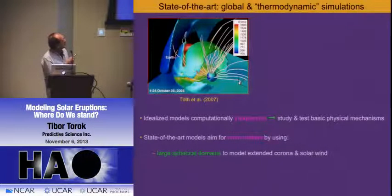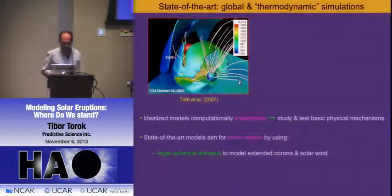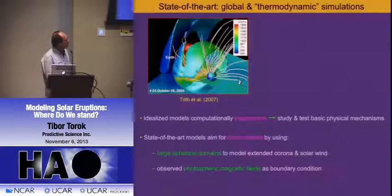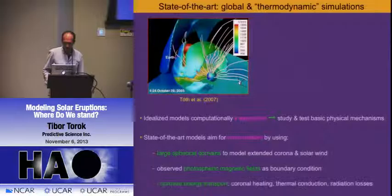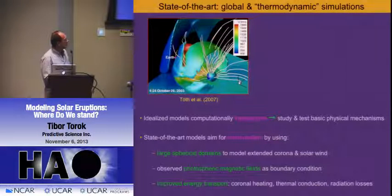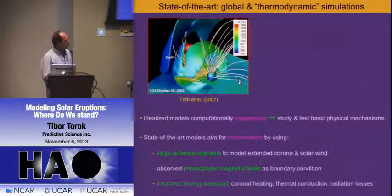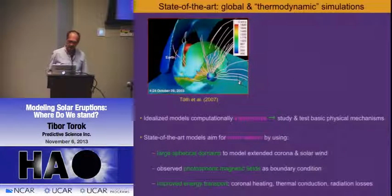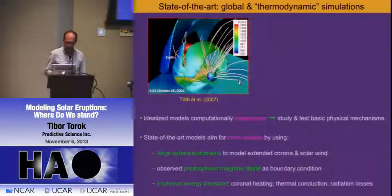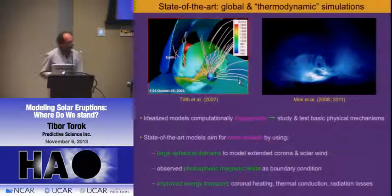These models often use photospheric measured fields as boundary conditions rather than just an analytical model. More recently, there is more physics in these models in terms of energy transport in the corona: empirical coronal heating, thermal conduction, and radiative losses. You need this kind of stuff if you really want to make the emission right as seen in satellites—particularly between active regions and in coronal holes.